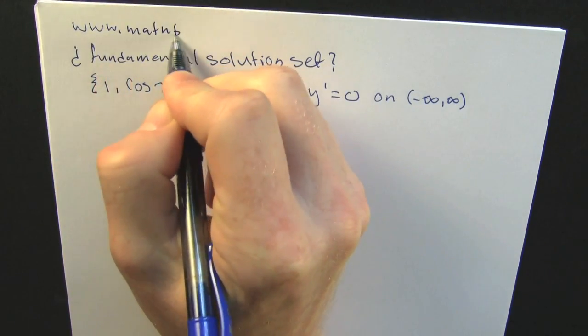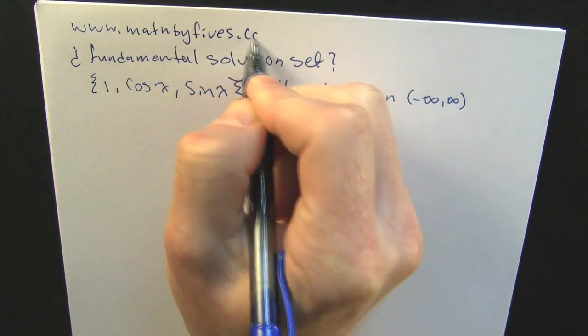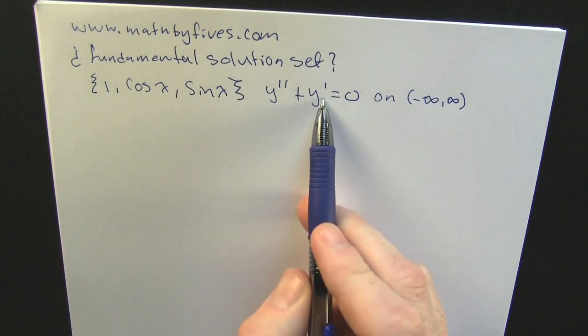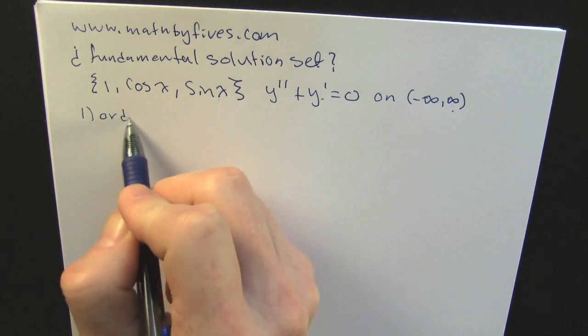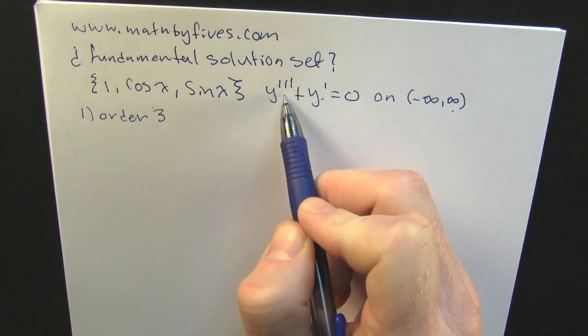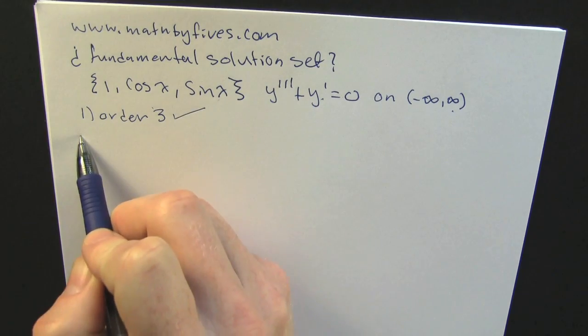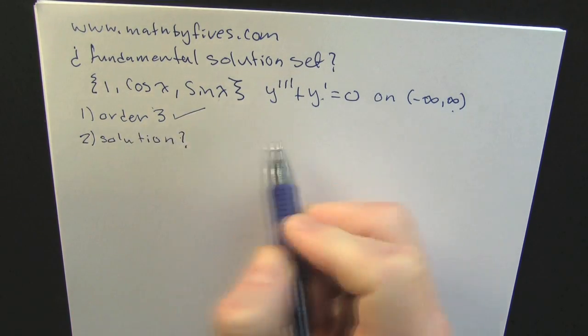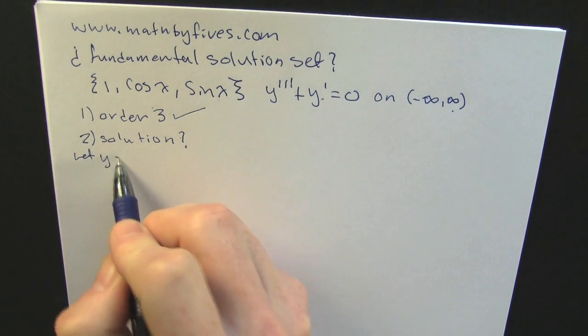The presenter introduces an example from mathbyfives.com. The problem has a set with three elements: 1, cos x, sin x. The differential equation is y''' = 0 on the interval (-∞, ∞). This is order 3, so it's possible because there are three elements and the differential equation is of order three. Order matches.